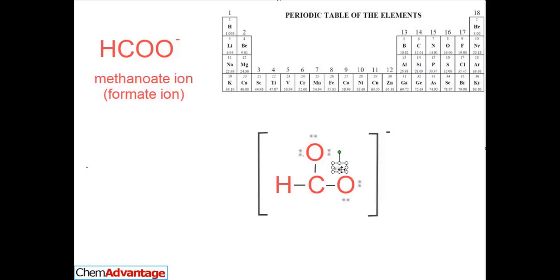But notice, both these oxygens are identical. They have nothing else attached to them. They're both attached to this carbon. Which pair of electrons would carbon decide to make a double bond with? This oxygen?